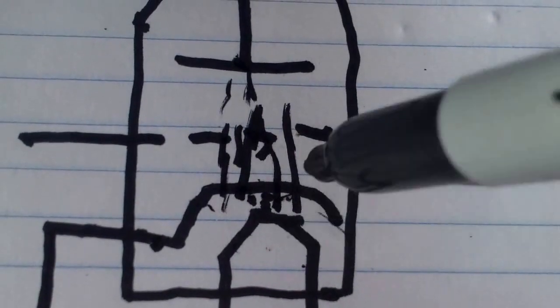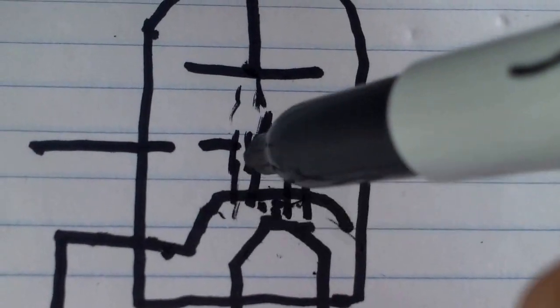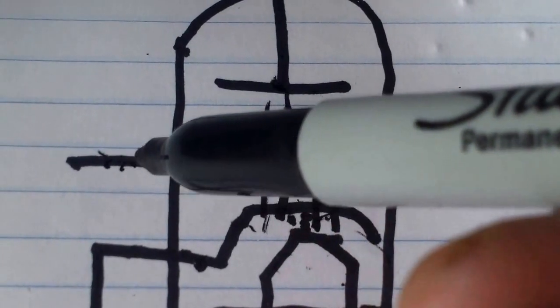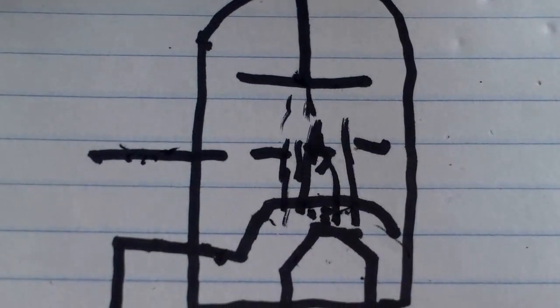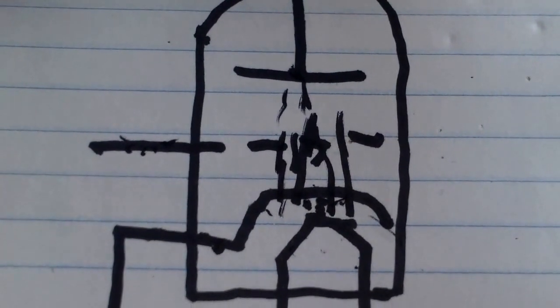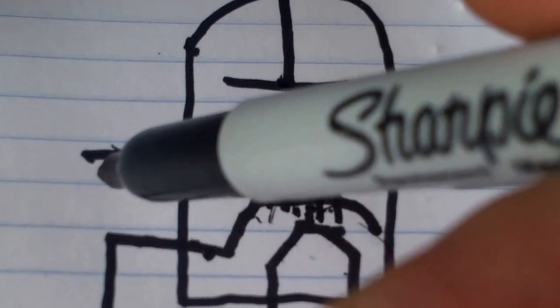And basically right now the tube just acts as a diode because there's nothing going on with this grid right here. But what we can do is that we can energize this grid.